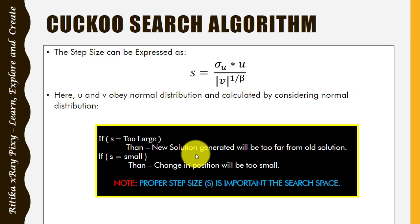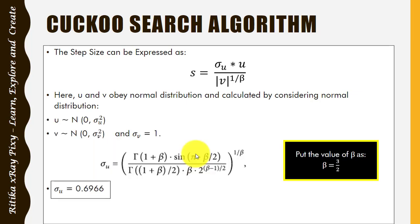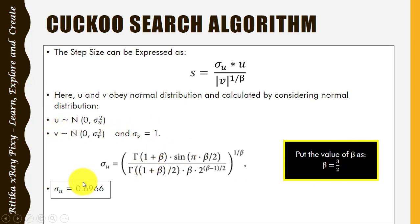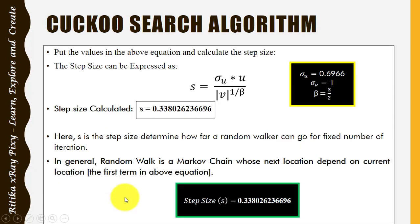If the value of s is smaller, the change in position will be too small, so it is important to use a proper step size for the search space. Putting in the values — where u is given, the value of beta is 3/2 — we get the standard deviation as 0.6966. Then putting those values in, we get the step size s = 0.33802.